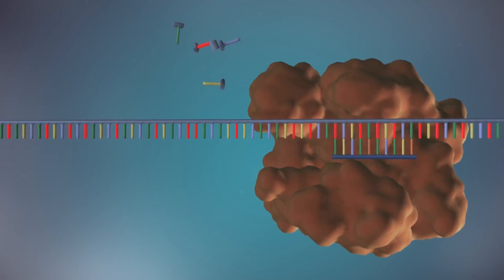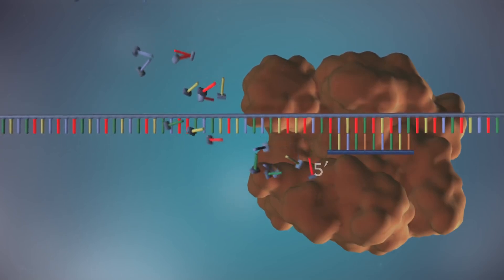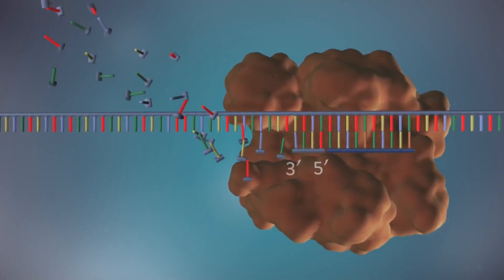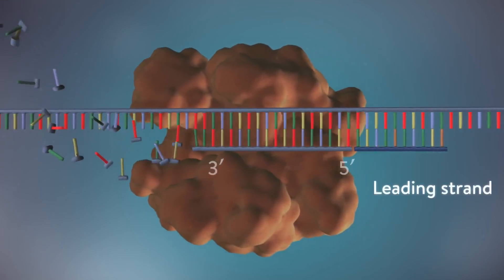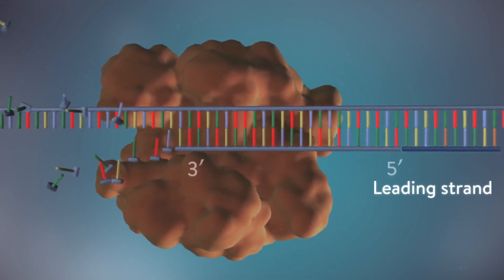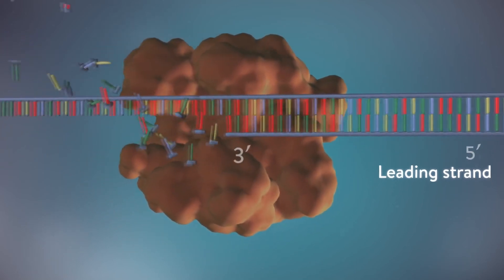DNA polymerase can only add DNA bases in one direction, from the 5' end to the 3' end. One of the new strands of DNA, the leading strand, is made continuously, the DNA polymerase adding bases one by one in the 5' to 3' direction.